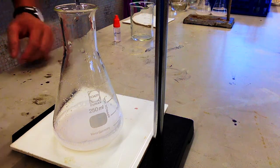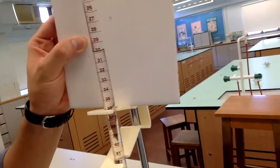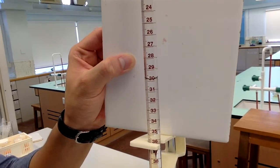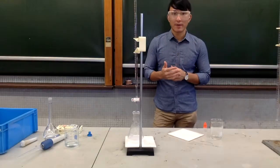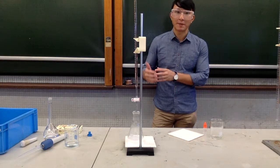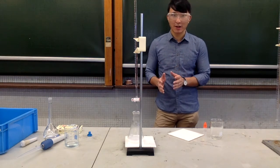Now we should record the final burette reading. This one should be 29.9. In order to make our result more reliable and precise, we should perform several more repeated trials. So this is the end of the experimental part.